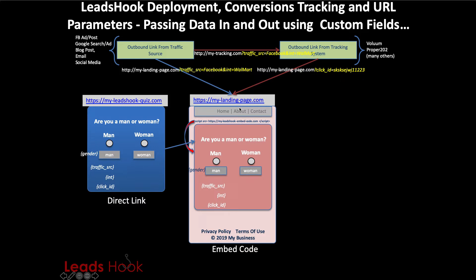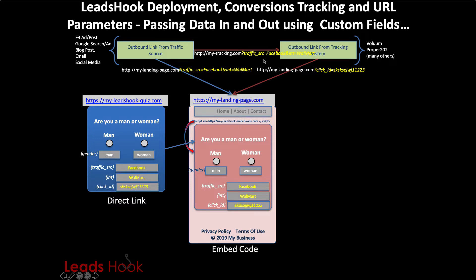The third-party tracking system turns everything into a sub ID or click ID and passes a bunch of numbers and letters. If you're doing direct link, Facebook and Walmart will end up in traffic source and interest. You could also append extra things like traffic source and interest alongside the click ID. This is exactly how UTM parameters work — UTM campaign, UTM source, UTM keyword, ad group — you can attach all of those at the end.